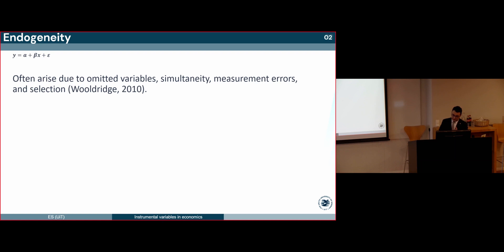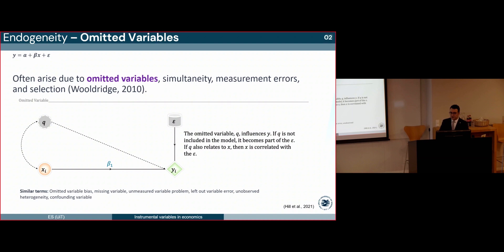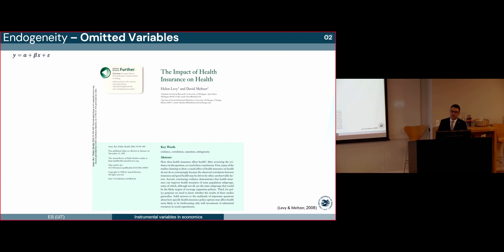Endogeneity often arises due to omitted variable bias, simultaneity, measurement errors, and selection. Let's assume that the omitted variable Q affects Y. So, when Q is not modeled, it's contained within the error term. When Q is also correlated with X, then X is correlated with the error term. In the literature, some similar terms refer to omitted variables, such as omitted variable bias, missing variable, and unmeasured variable problem.